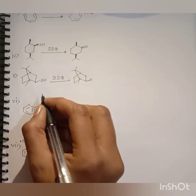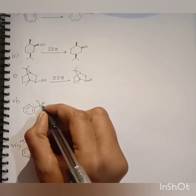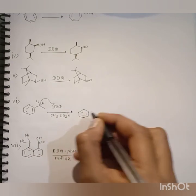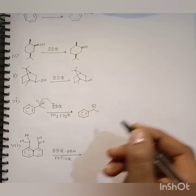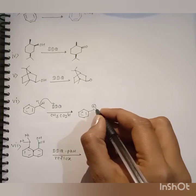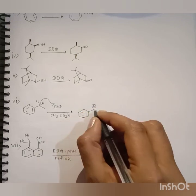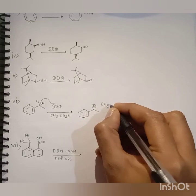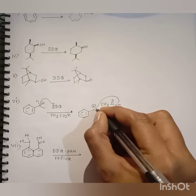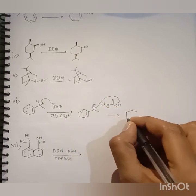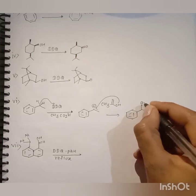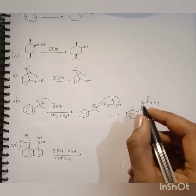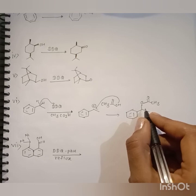In this example, DDQ first abstracts this hydrogen, which leads to the formation of a benzylic carbocation. In the next step, this carbocation is captured by a nucleophile, and finally we get the product where oxidation of this benzylic position takes place.